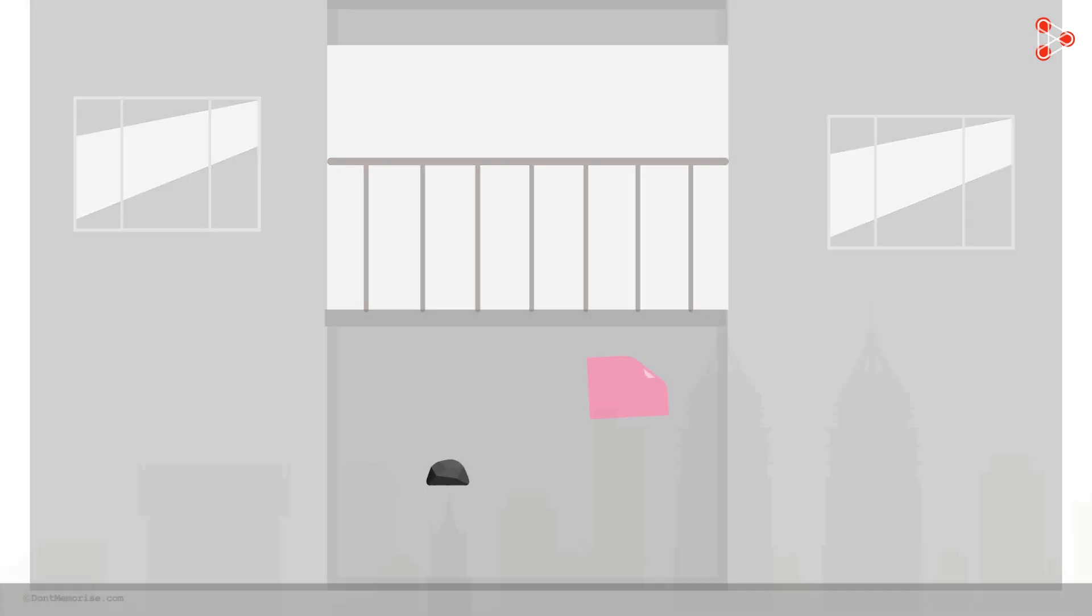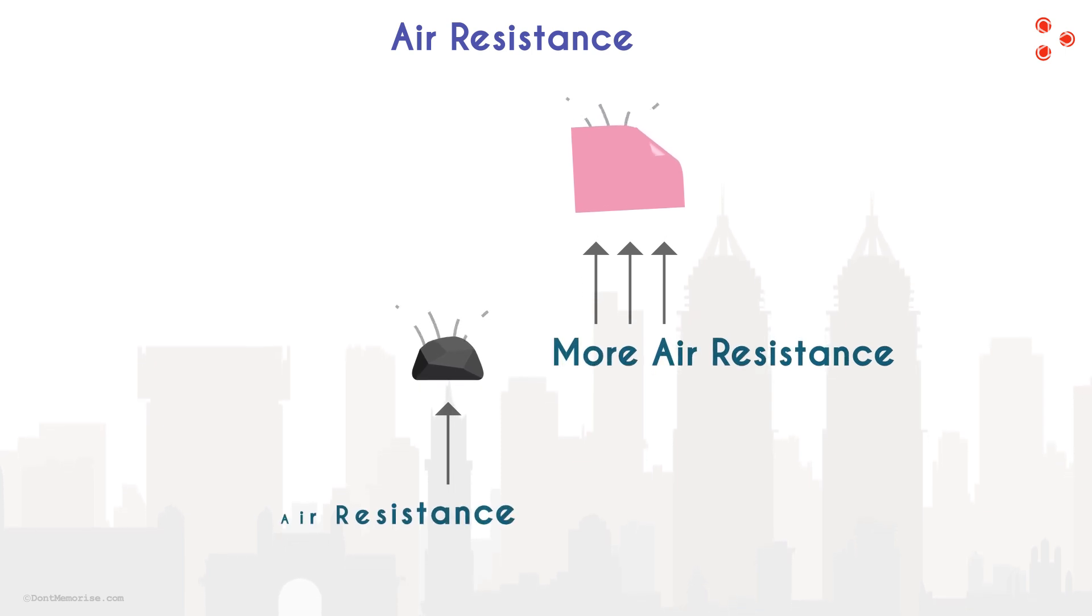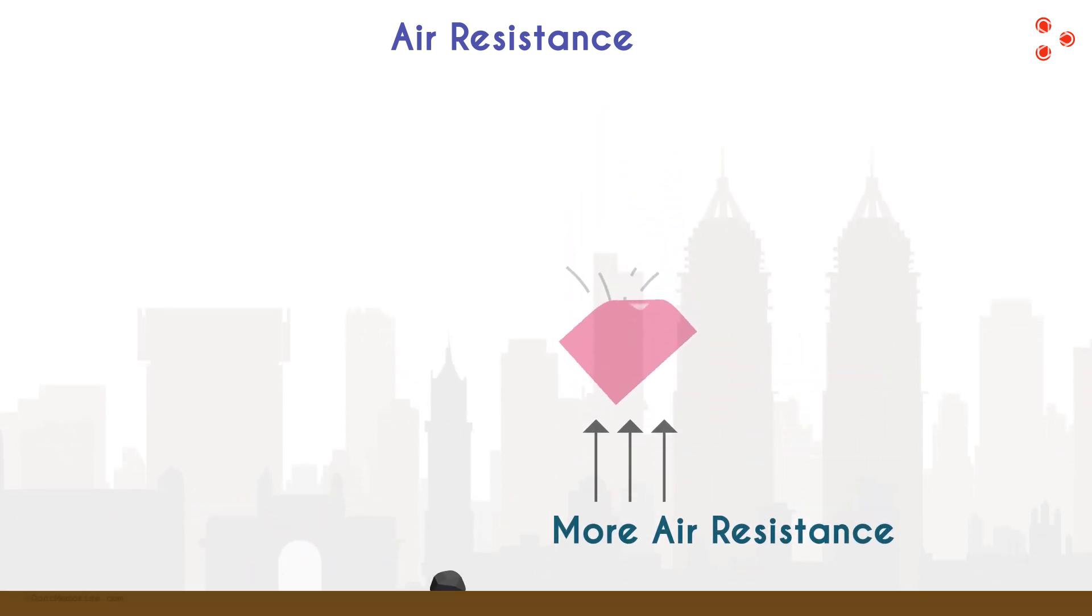The answer to this is air resistance. When objects are falling towards the ground, the air offers resistance in the upward direction. And the resistance offered to the paper is more than the resistance offered to the stone. That is why the stone falls to the ground first.